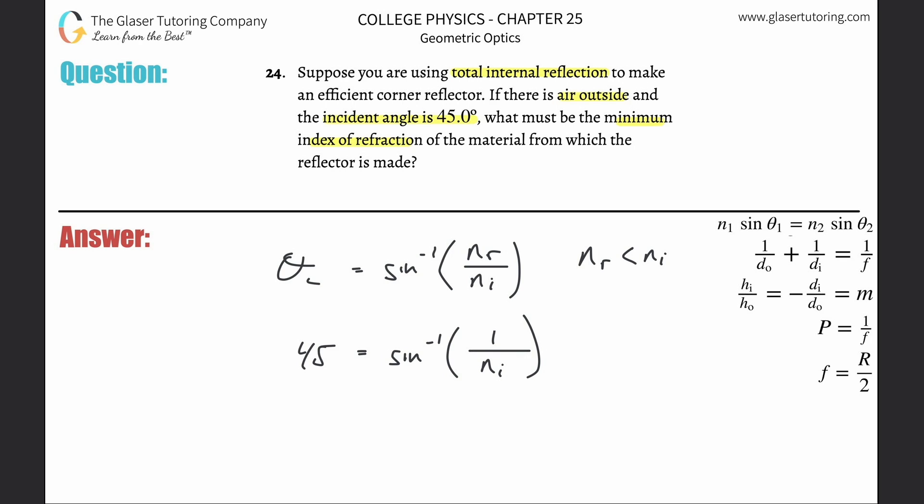Now all we have to do is rejig this equation. I've got to get rid of the inverse sine, so that means I have to take the sine of both sides. I've got to take the sine of 45, and that will equal the sine of this thing. Sine cancels.